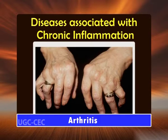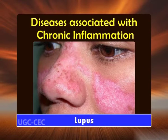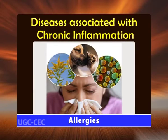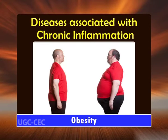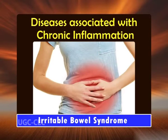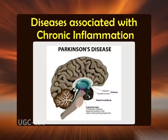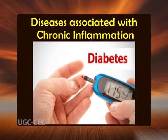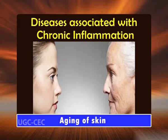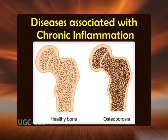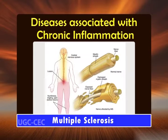Diseases associated with chronic inflammation include arthritis, autoimmune diseases, allergies, asthma, heart disease, hypertension, stroke, obesity, irritable bowel syndrome, Alzheimer's disease, Parkinson's disease, diabetes, psoriasis, acne, fibromyalgia, aging of skin and wrinkles, osteoporosis, gingivitis, and multiple sclerosis. With this we come to the conclusion of our lecture. Thanks for watching.